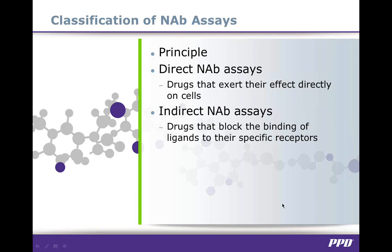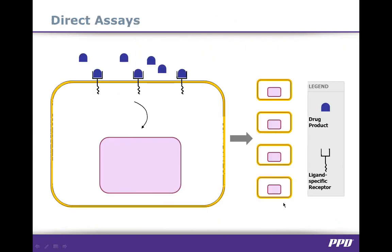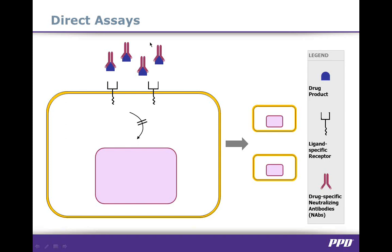There are two types of NAB assays: direct and indirect. The distinction is based on the drug's mechanism of action. Direct assays are generated by drug products that exert their effect directly on the cell, stimulating a specific cell response. Without neutralizing antibodies present, the drug product binds to a ligand-specific receptor on the cell surface and elicits a cellular response, such as cellular proliferation. In the presence of neutralizing antibodies, however, these bind to the drug product, which prevents binding to the cell surface receptors, resulting in either decreased or an abrogated response.